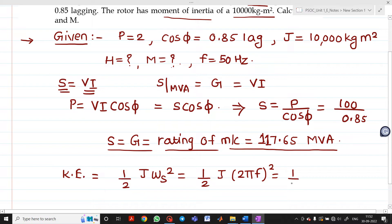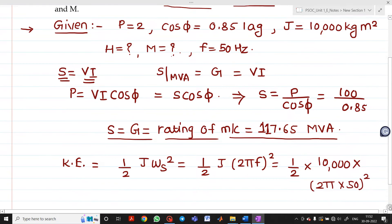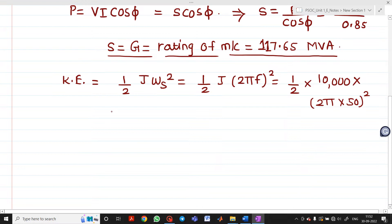Substitute all the values given in the numerical. Half times J is 10,000 times (2 pi times 50) square.